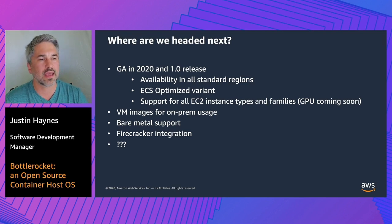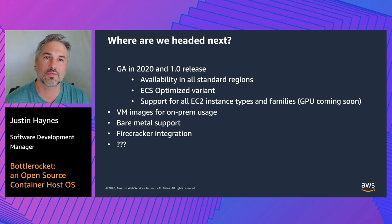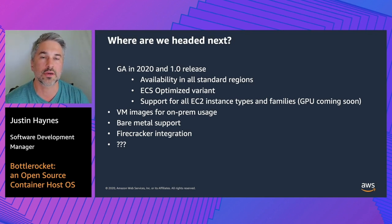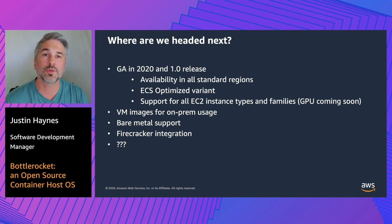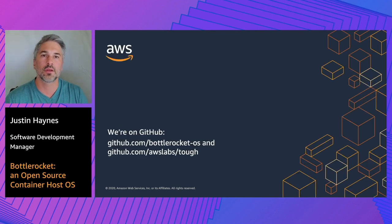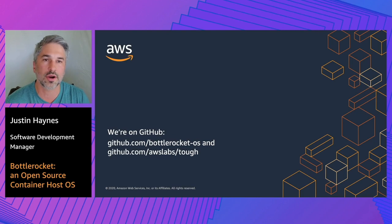Finally, BottleRocket is open source and on GitHub, and we want to build a community around it. We believe we've built something extensible and flexible enough to be used for multiple orchestrators, multiple cloud providers, on-prem, and even bare metal. Please tell us where you'd like to see BottleRocket go — through feature requests, issues, bug reports, or pull requests on GitHub. Thank you so much for listening, and we hope to see you soon on GitHub at BottleRocket-OS or on our TUF repository at AWS Labs. Thank you very much.